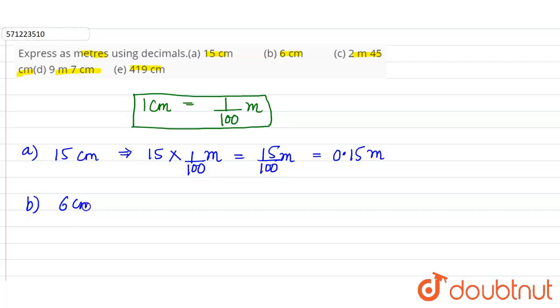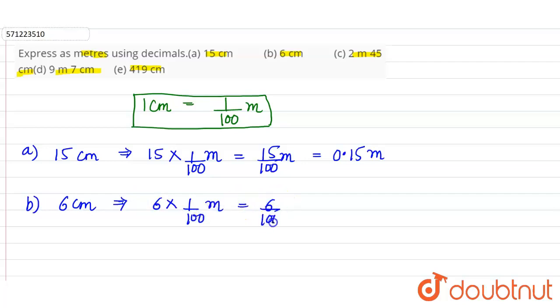Part B: convert 6 centimeter into meter. 6 centimeter means 6 into 1 by 100 meter, which equals 6 by 100 meter. Placing the decimal before two digits from the left gives 0.06 meter.